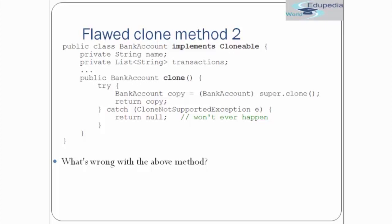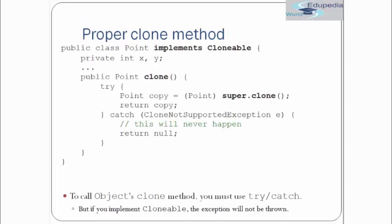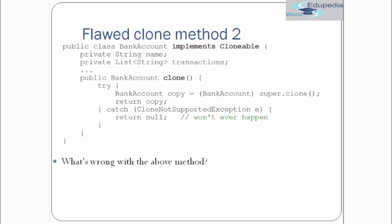Look at the data members of this class. It has a String name and another variable which is a List of String type called transactions. In our previous case we were having simple primitive types x and y of type int. That difference is what makes this implementation flawed.